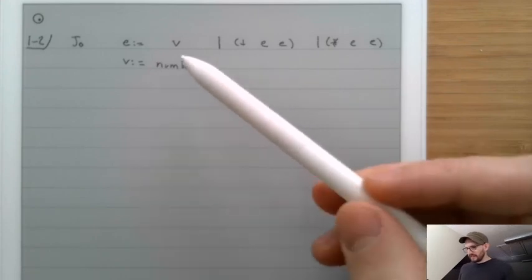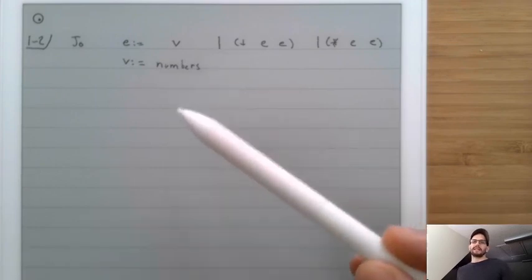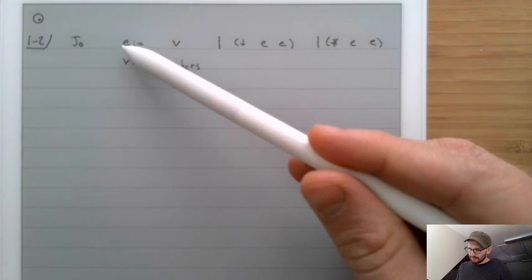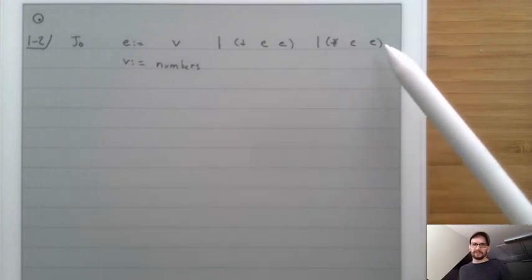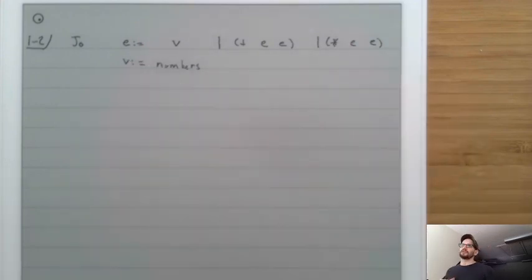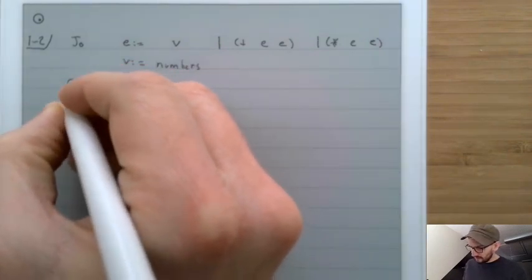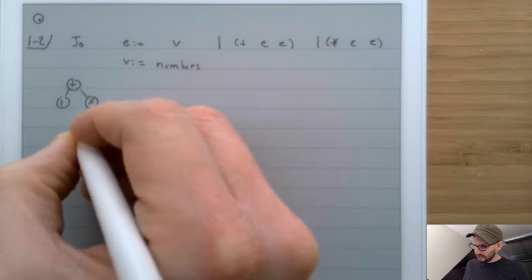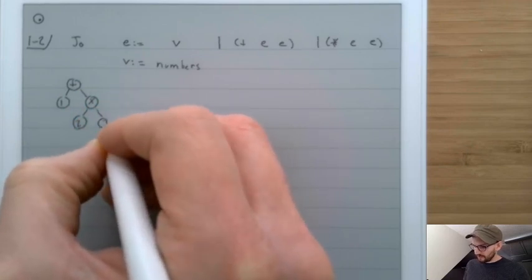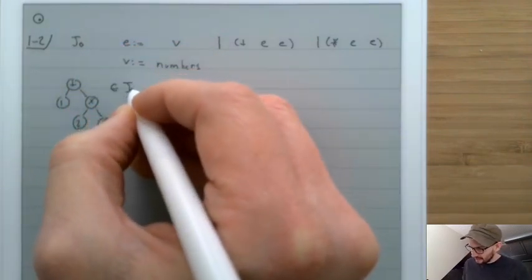I've used the bar symbol to stand for the word 'or'. So an expression is either a V, a node with plus and two children, or a node with times and two children; and V is numbers. An example element of E would be a plus node with child '1' and child 'times', where times has children '2' and '3'. This is an example program inside J0.